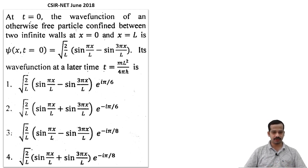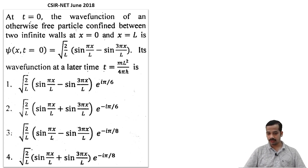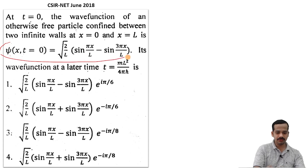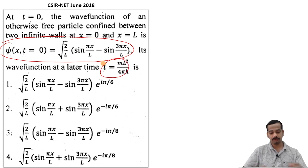Let me take CSIR NET June 2018 question. Pause the video and read the question carefully. At time t equal to 0, the wave function of an otherwise free particle confined between two infinite walls at x equal to 0 and x equal to L is psi(x, 0) equal to root of 2 by L times [sin(pi x by L) minus sin(3 pi x by L)]. They are asking what is the wave function at later time t equal to m L-square by 4 times 5 h-bar.